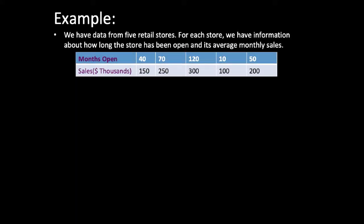Here is an example. We have data from five retail stores. For each store we have information about how long the store has been open and its average monthly sales. We have two variables: months open and sales. The explanatory variable is months open and the response variable is sales, because sales depend on how long the store has been open.